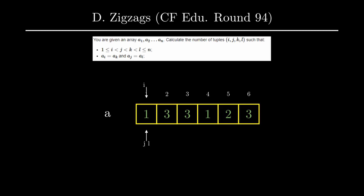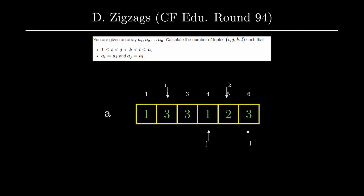A very brute force approach would be to have four nested for loops, each for i, j, k, and l, and check whether a[i] is equal to a[k] and a[j] is equal to a[l]. If both of these conditions are satisfied then we increment the answer by one. The time complexity of this approach will be O(n⁴), which will time out.